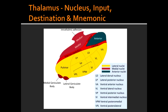The input information for the Lateral Geniculate Nucleus (LGN) comes from cranial nerve 2, the optic nerve. The LGN receives vision information, and its end destination is the calcarine sulcus. The mnemonic to remember this: lateral equals light, so the lateral geniculate nucleus receives vision information.